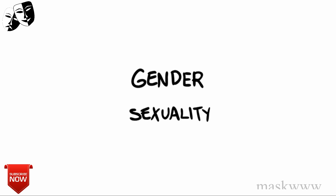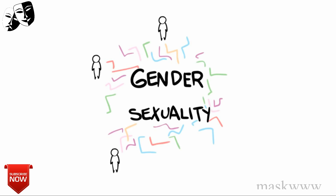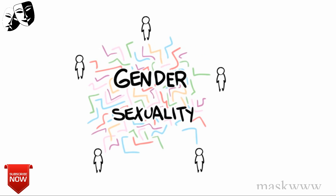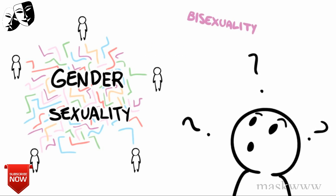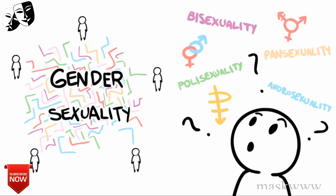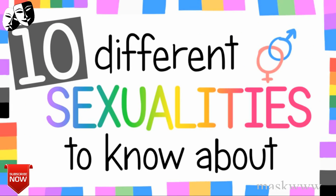Gender and sexuality are two concepts that are incredibly individualized, and so it shouldn't be surprising that they are so complex. It can be hard to navigate the world of sexuality due to the different terms and labels. This video aims to help you navigate this world by arming you with some definitions and examples of 10 different sexualities, some of which you might not even know about.